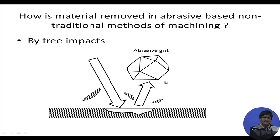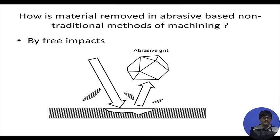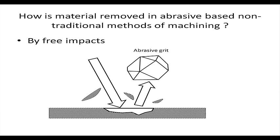The abrasive itself must be hard. If it is not hard, it will deform and dissipate the kinetic energy it carries. Secondly, it must be rigid — if it fractures very easily, it will also lose part of the energy with which it was projected toward the work piece. Therefore, hard material particles are chosen as abrasive particles.